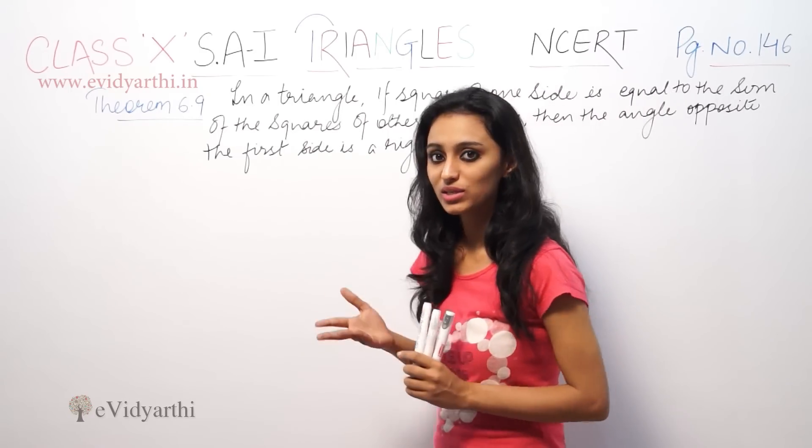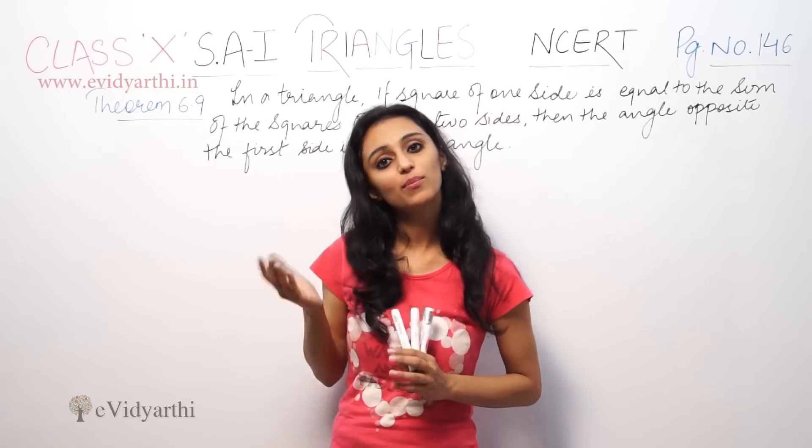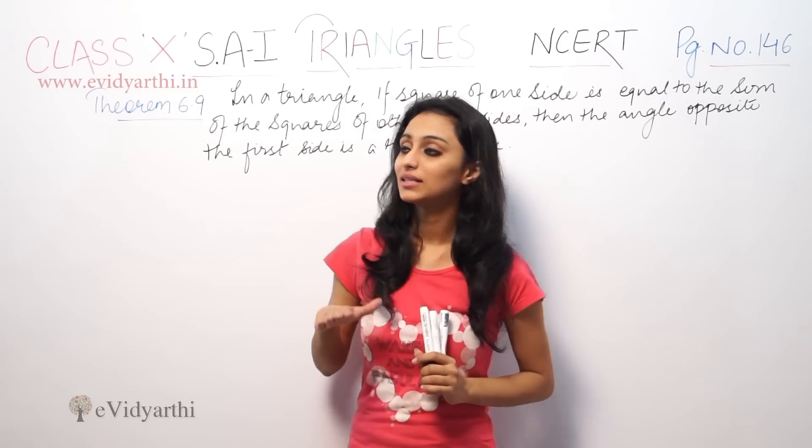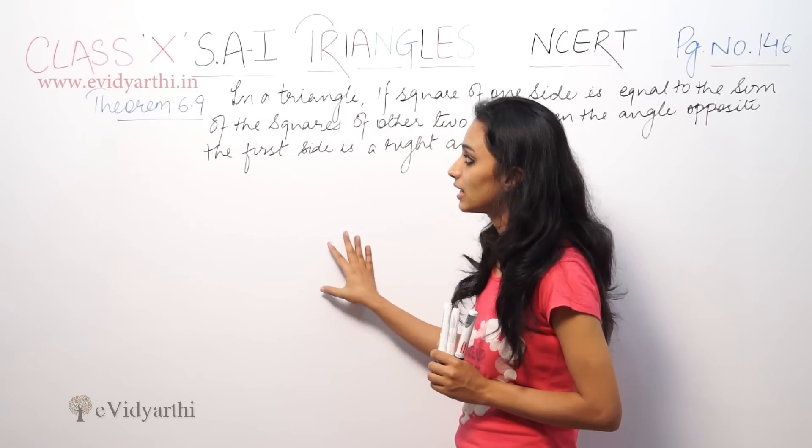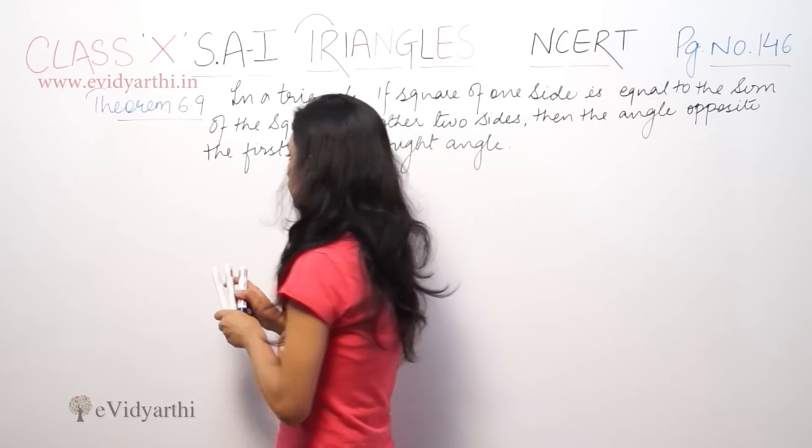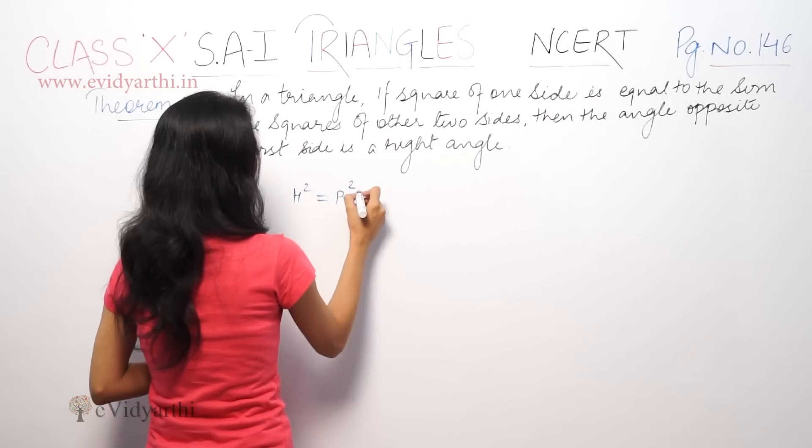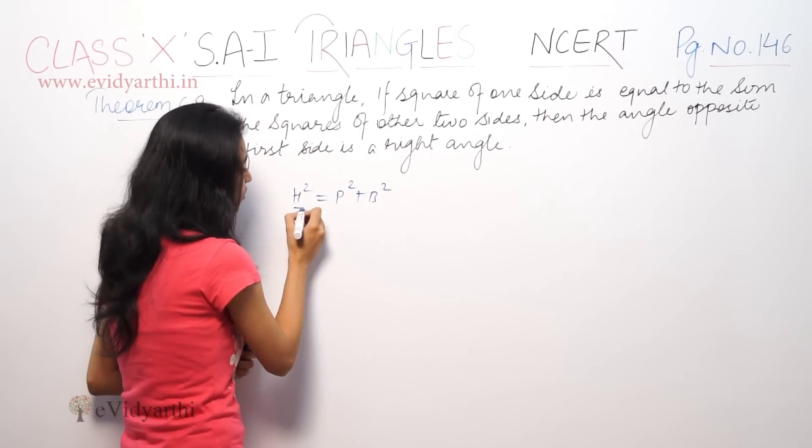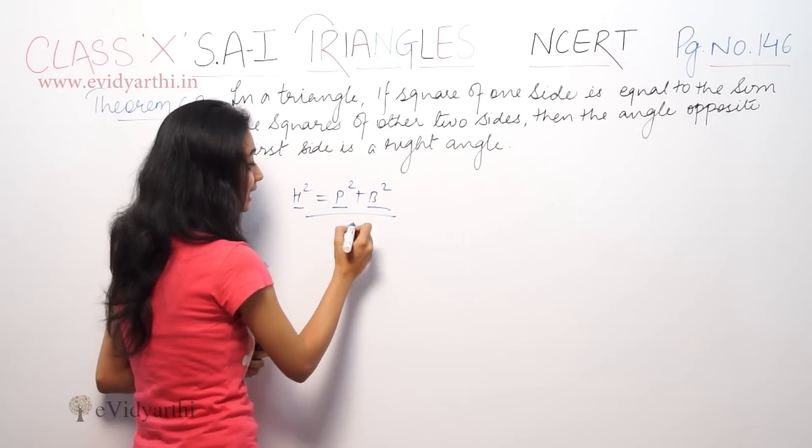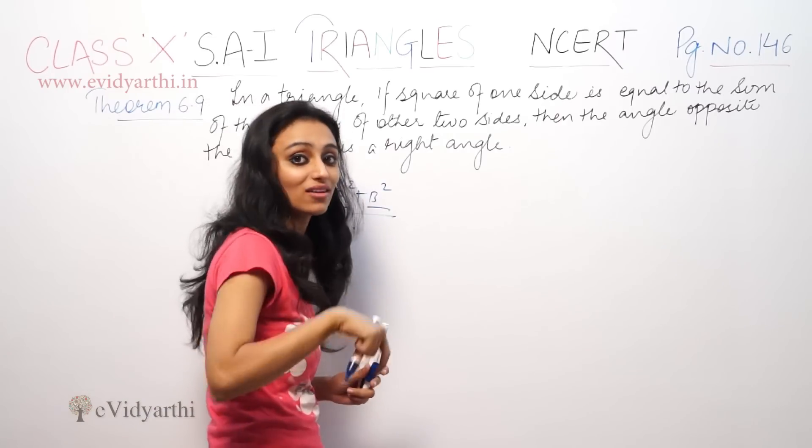We have discussed the theorem in previous videos. We proved that AC² equals AB² plus BC². Here, we have given that AC² equals AB² plus BC², but we must prove it is a right angle.